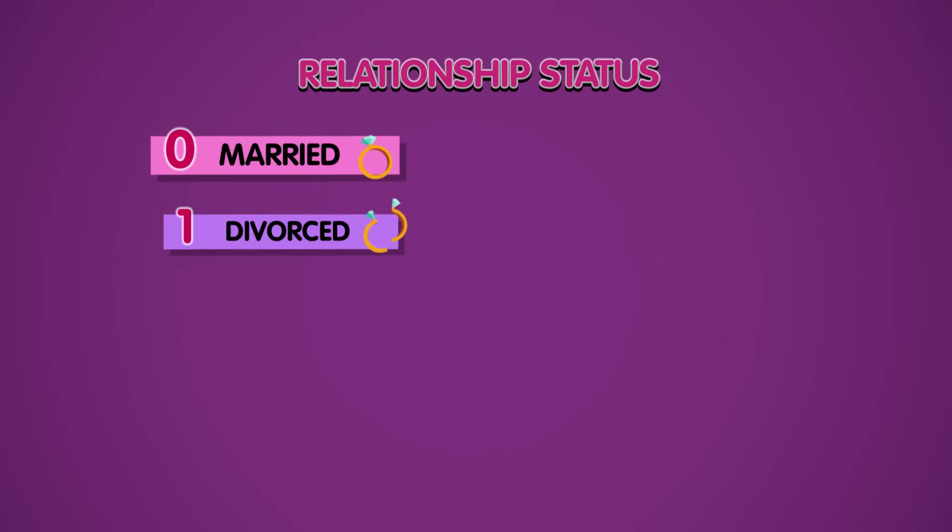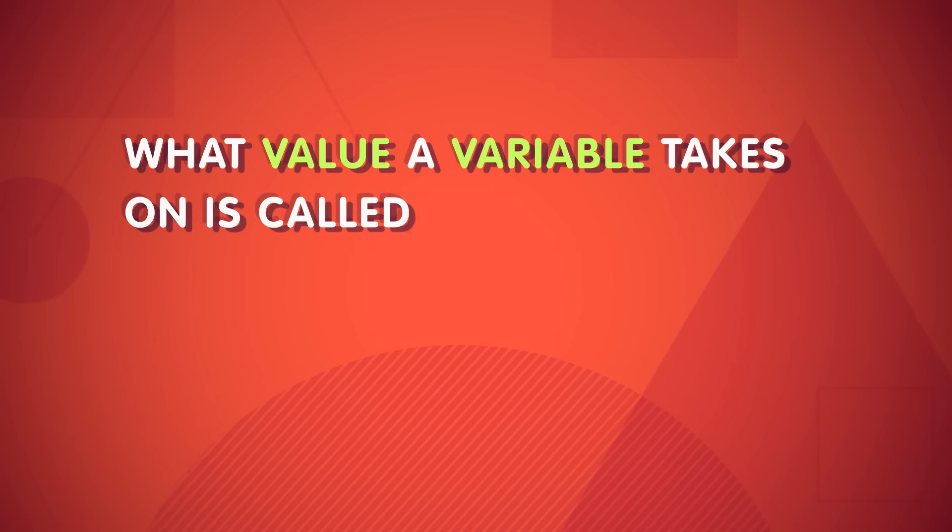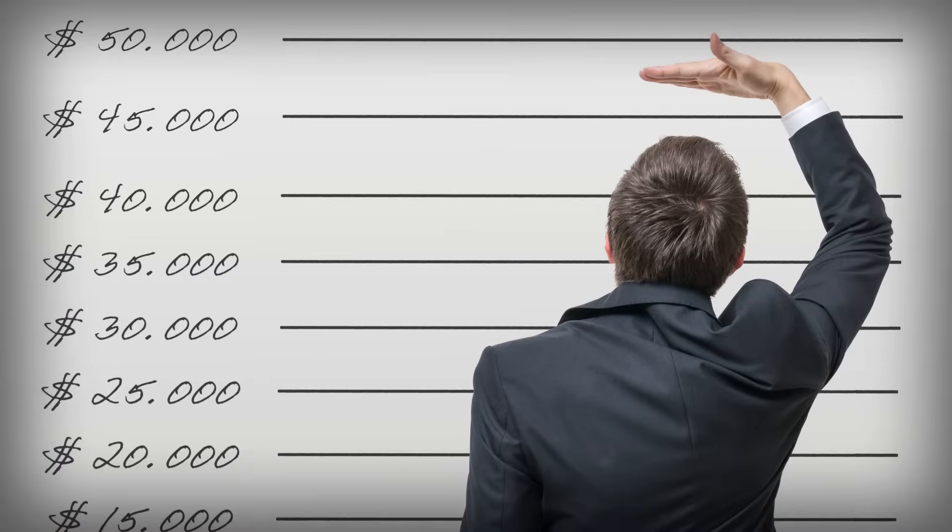Only then can you assign each person in your sample a number corresponding to their relationship status – like zero if they're married, one if they're divorced, two if they've never been married, and so on until every person is labeled. And what value a variable takes on is called its measurement. You can measure someone's height, their income, or their relationship status. It doesn't matter how many categories your variable has. What's important is that the way you define your categories is both reliable and valid.